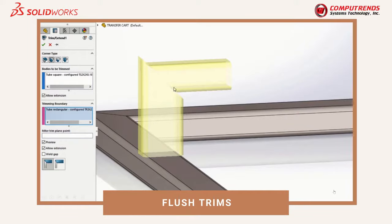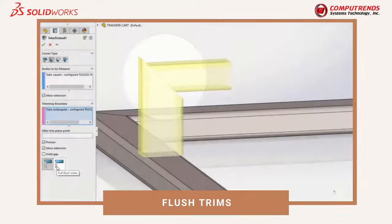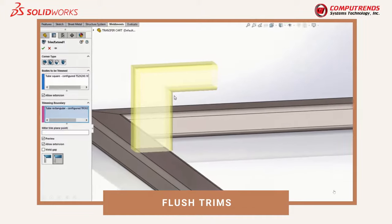Because these pipes have different profiles, the equal angle of the miter does not produce the desired result. In SOLIDWORKS 2021, there is a new option for miter trims: the flush miter. It trims the pipes so that they meet flush.